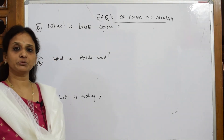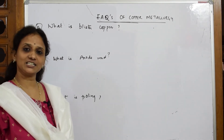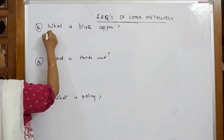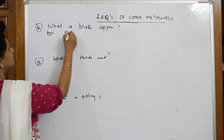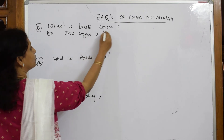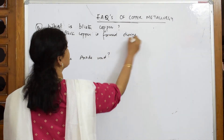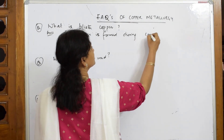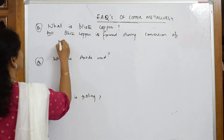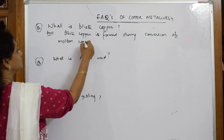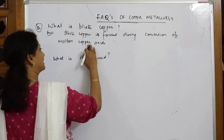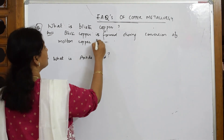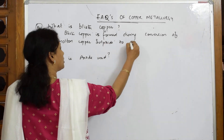Let us do the next FAQ question in copper metallurgy. What is blister copper? We've already done this in the Bessemer process. Blister copper is formed during conversion of molten copper sulfide to copper oxide. From copper sulfide only, we convert it into copper oxide — that is, molten copper sulfide to copper oxide.